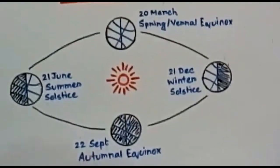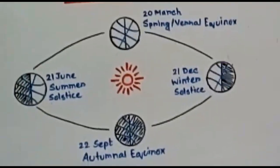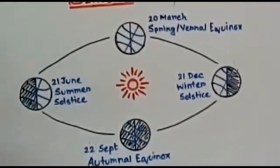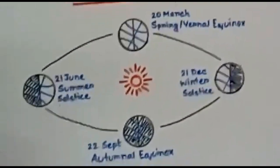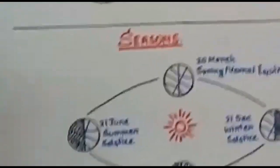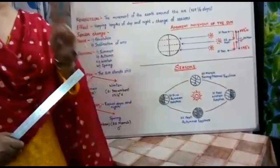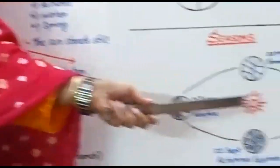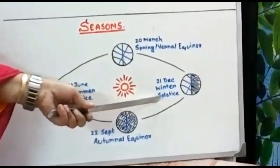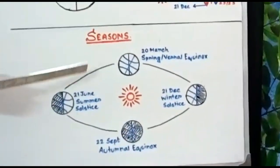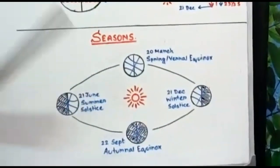What is solstice? Solstice means the sun stands still, and equinox means equal day and night. Solstice creates two seasons and equinox creates two seasons. Solstice creates summer and winter, and due to equinox we get autumn and spring.